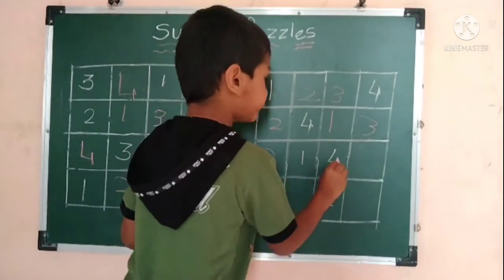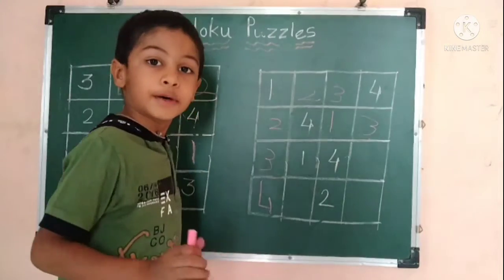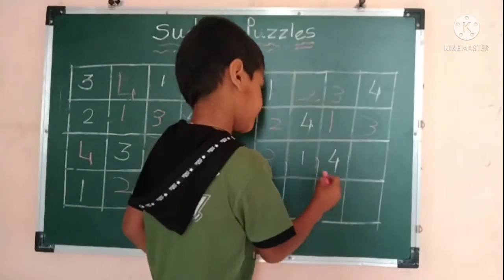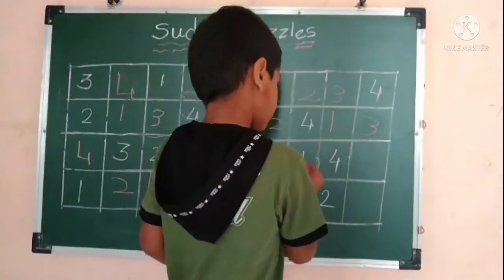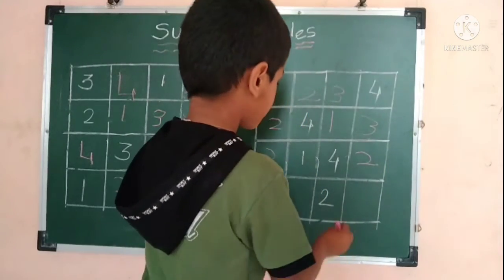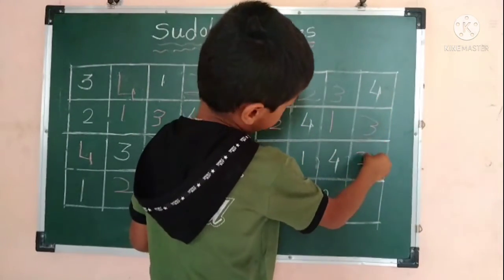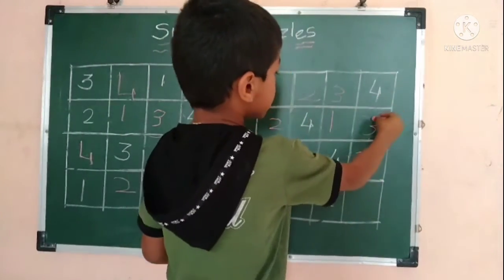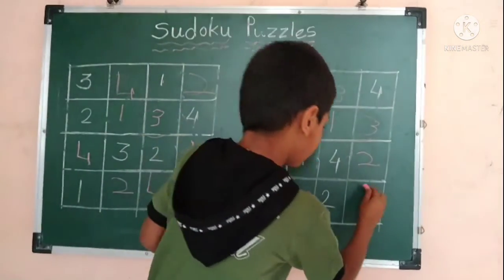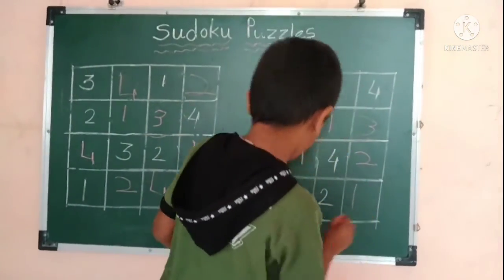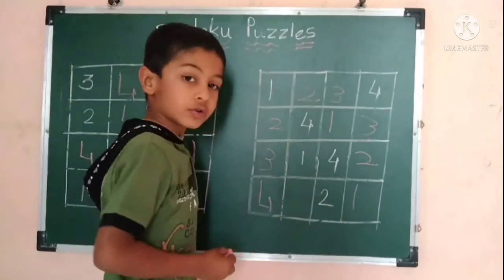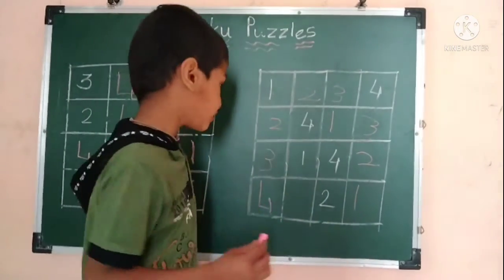One, three, four — which number is missing? Two. Two, three, four — which number is missing? One. One, two, four — which number is missing? And this is all the puzzle.